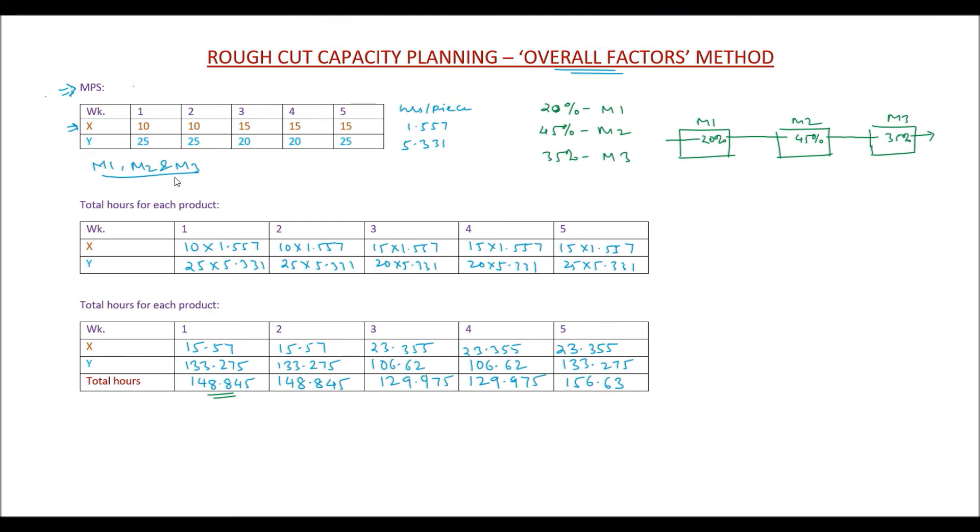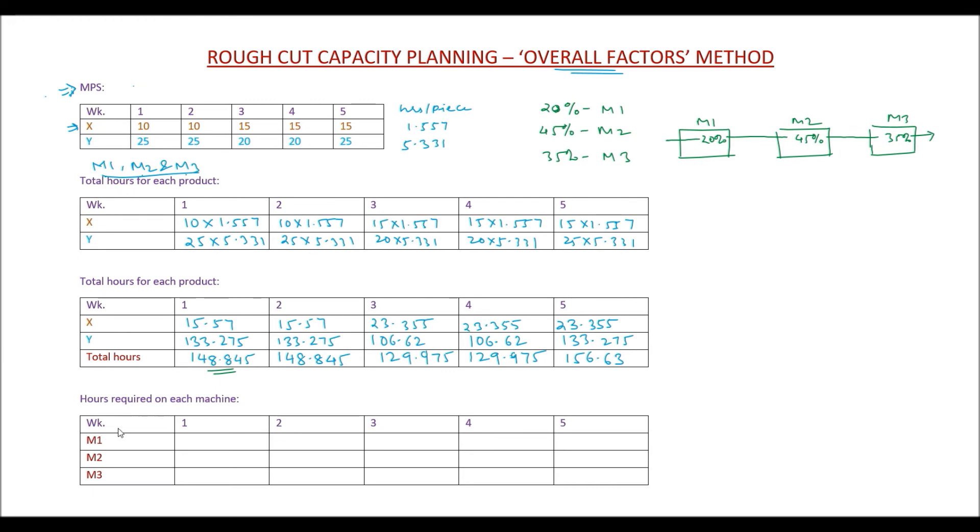Earlier we had found out the total number of hours required to produce X and Y in each of these periods utilizing M1, M2, and M3. However, we did not find out how much hours is required on M1, how much hours are required on M2, and how much hours are required on M3, because each of these machines will have their individual capacities. We need to identify whether any of these machines is being over-utilized or under-utilized.